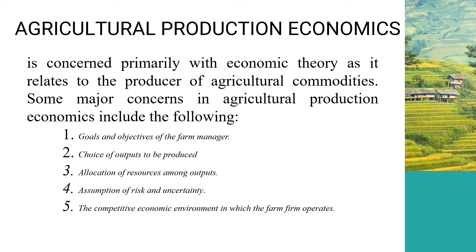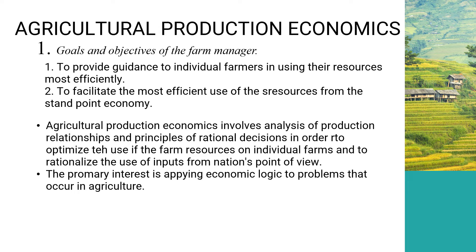Agricultural production economics is primarily concerned with economic theory as it relates to the producer of agricultural commodities. The major concerns include: the goals and objectives of the farm manager, the choice of outputs to be produced, allocation of resources among outputs, the assumption of risk and uncertainty, and the competitive economic environment in which farm firms operate.